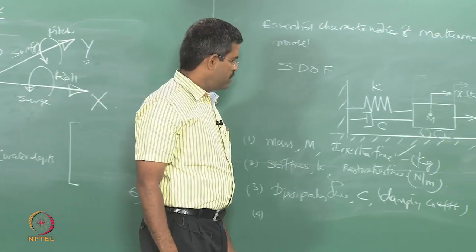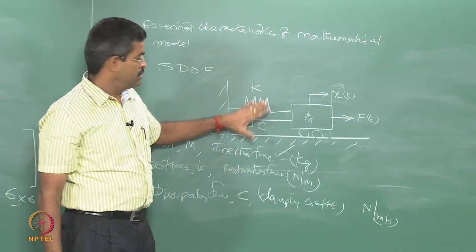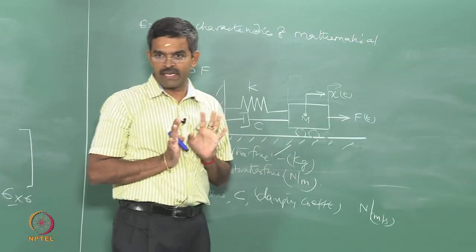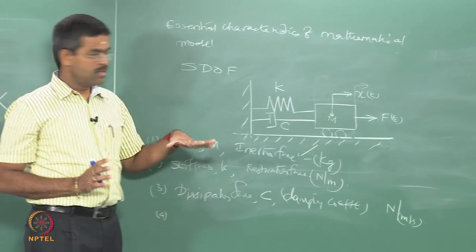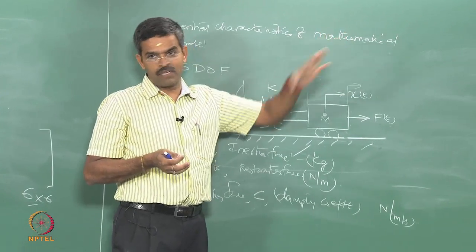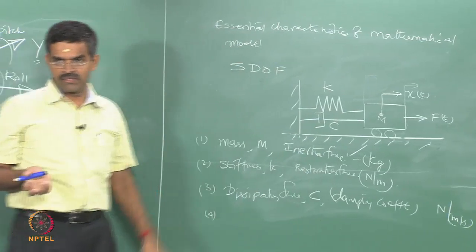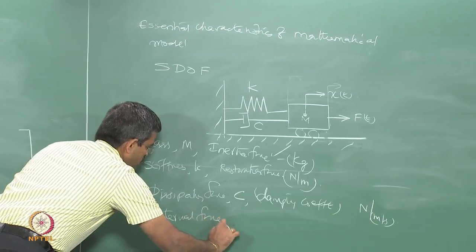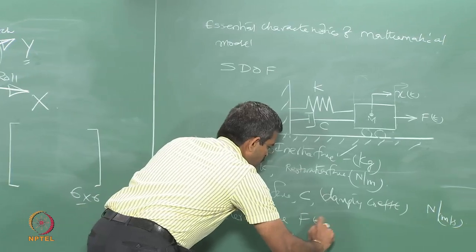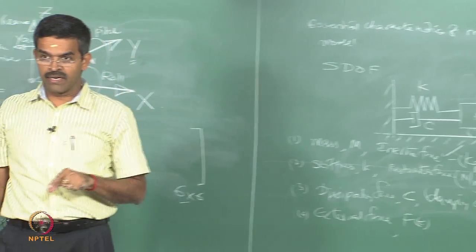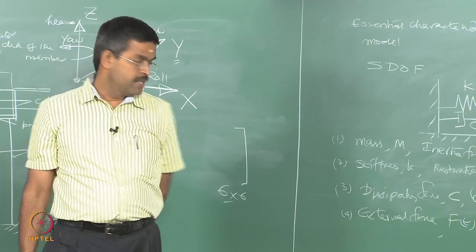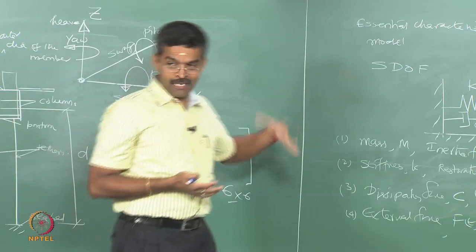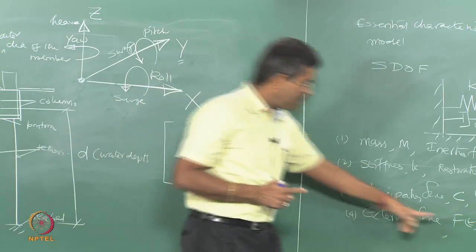If I have a system where mass is present, spring constant is available, and dashpot is also available, but there is no force, the mass is static and not moving at all. When the mass does not move, x of t is not activated, x-double-dot does not come, therefore no inertia force and no dynamic analysis. So the fourth component is external force, which must remain as a function of time because time variance is an important character of dynamic loading. It can be periodic or non-periodic, prescribed or non-prescribed, deterministic or non-deterministic, but it has to remain as a function of time.